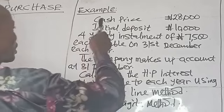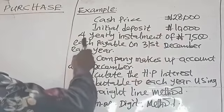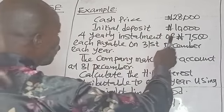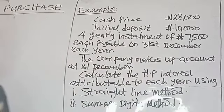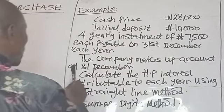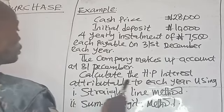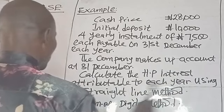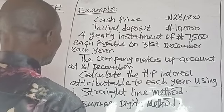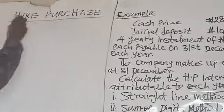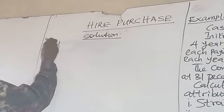Example: Cash price ₦20,000; initial deposit ₦10,000; four yearly installments of ₦7,500 each, payable on 31st December each year. The company makes up accounts at 31st December. Calculate the Hire Purchase Interest attributable to each year using: (1) the Straight Line Method and (2) the Sum of Digits Method.